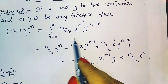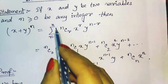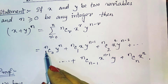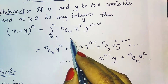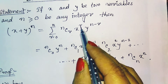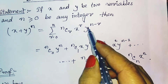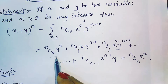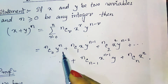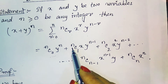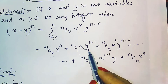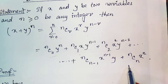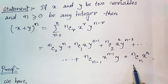If we expand it, where r goes from 0 to n: when r = 0, we get nC0 · x^0 · y^n, which simplifies to y^n as the first term. When r = 1, we get nC1 · x · y^(n−1). And likewise, the remaining terms can be found.